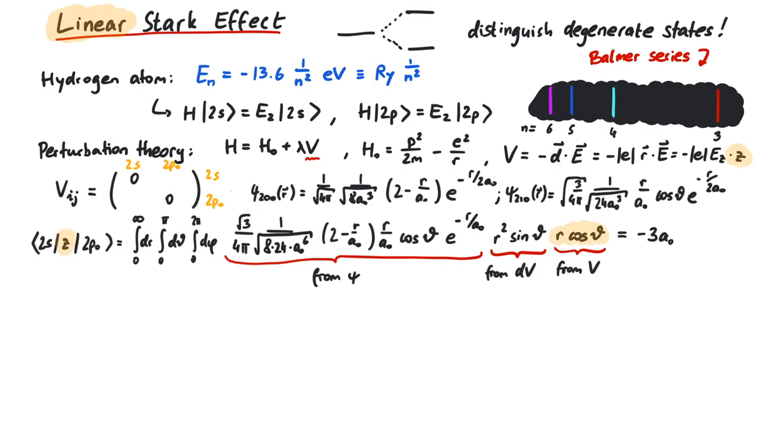Now the matrix whose eigenvalues should give us the energy corrections reads 0, 3a ee, 3a ee, 0. You can now either calculate the eigenvalues directly or notice that this matrix is 3a ee times the first Pauli matrix.